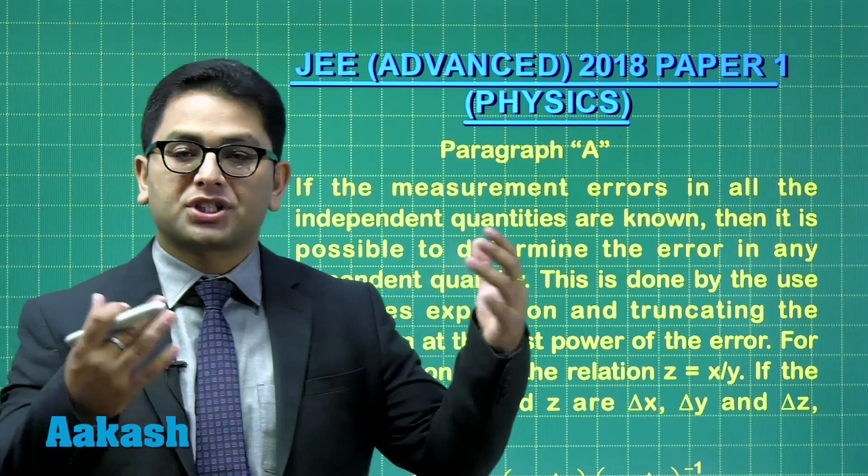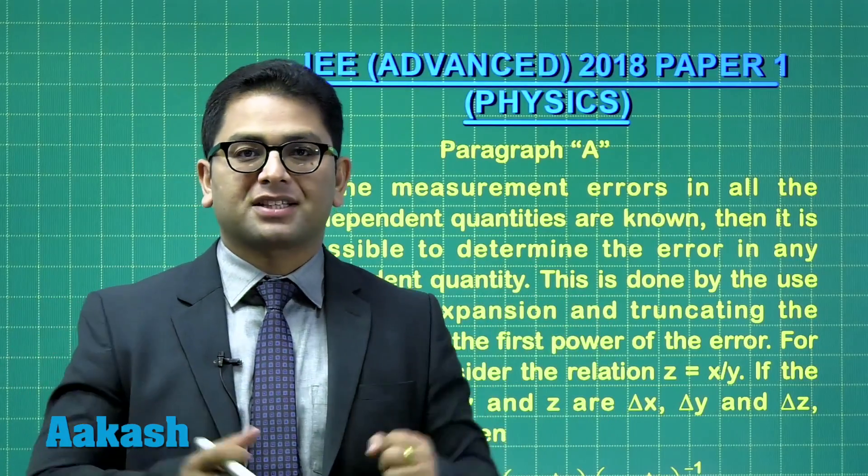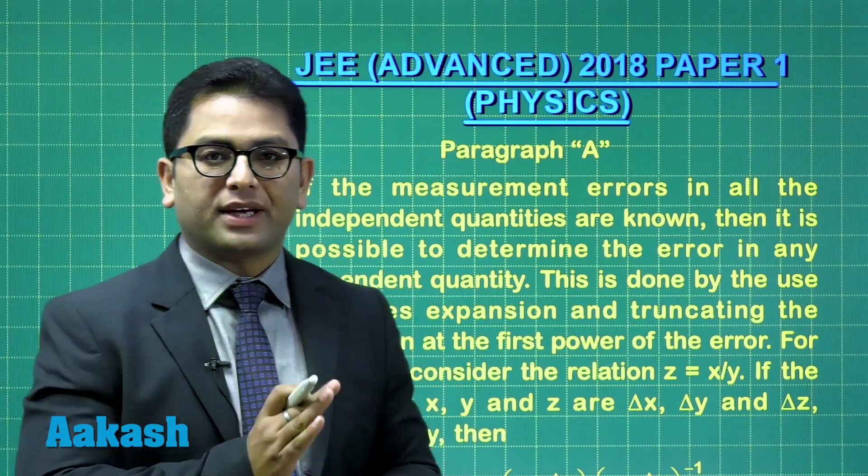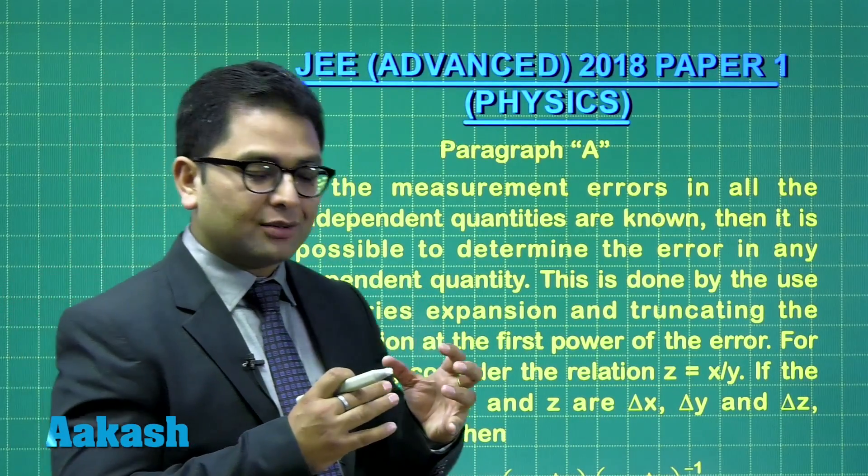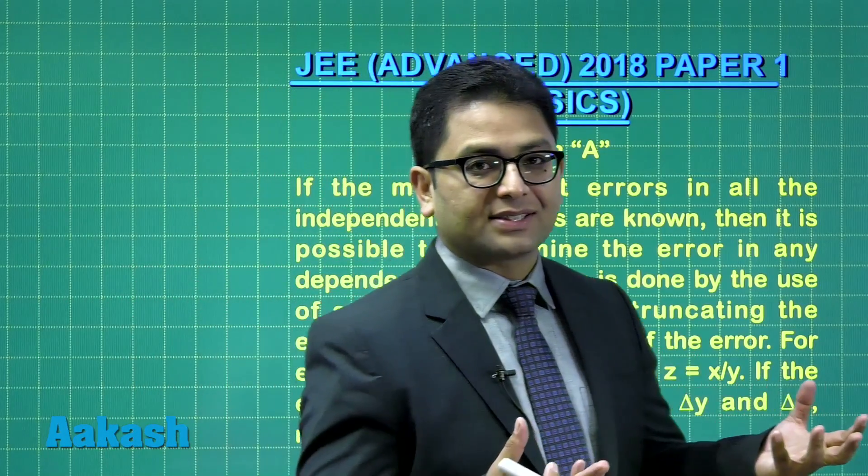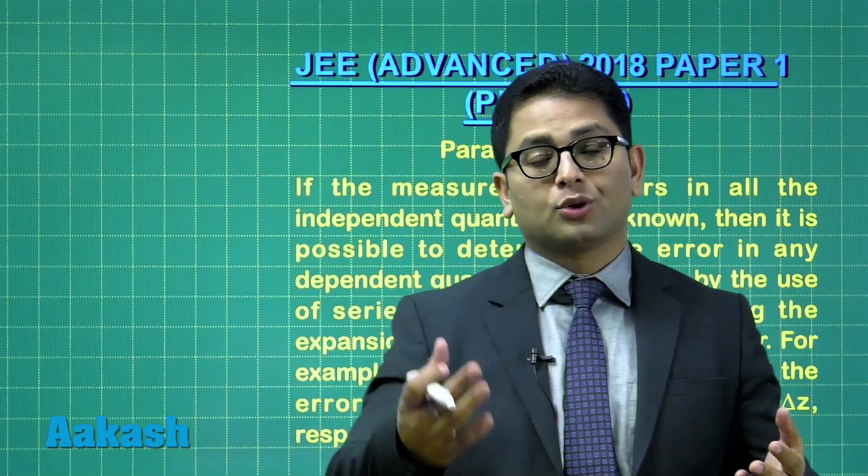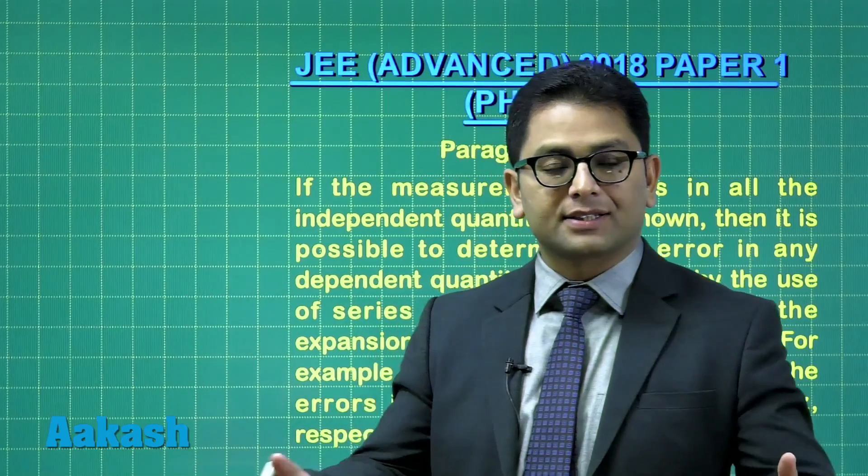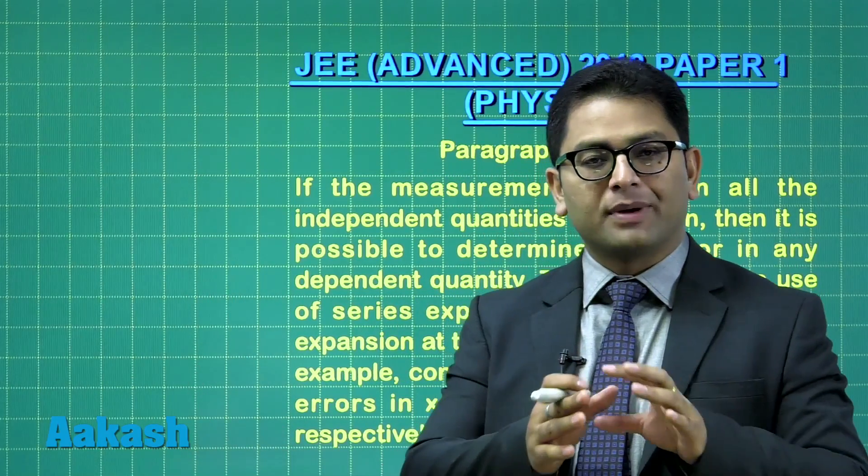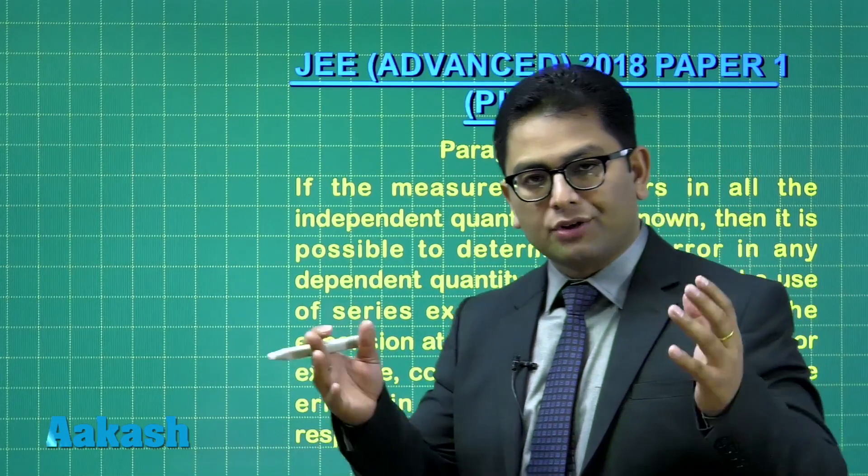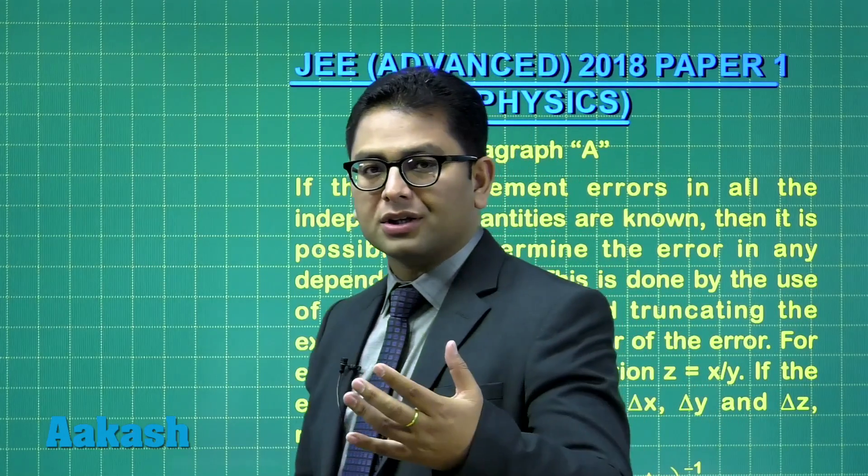This is simply the description of error propagation that we learn. By the way, have you ever realized that when it comes to experimental physics, you talk about all those errors, propagation of errors, gadgets, like you may have the post office box, you may have the resonance column, and so on.